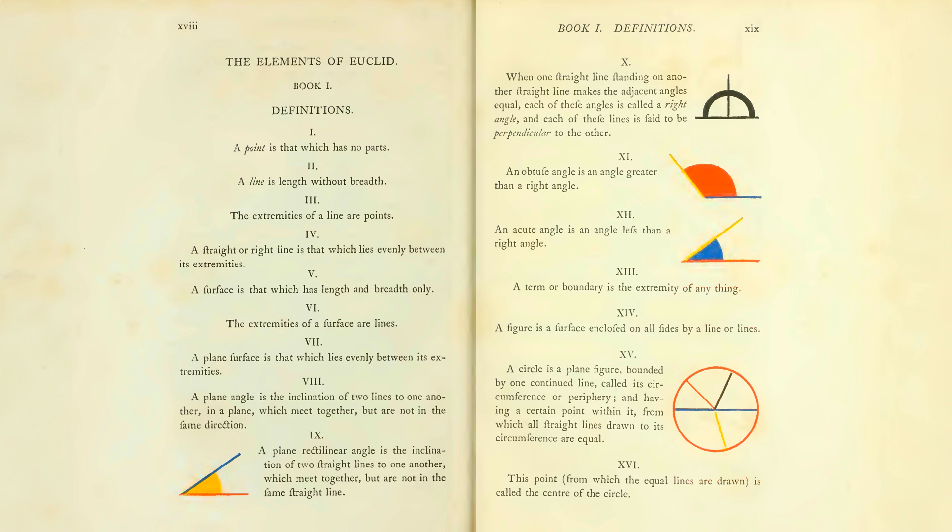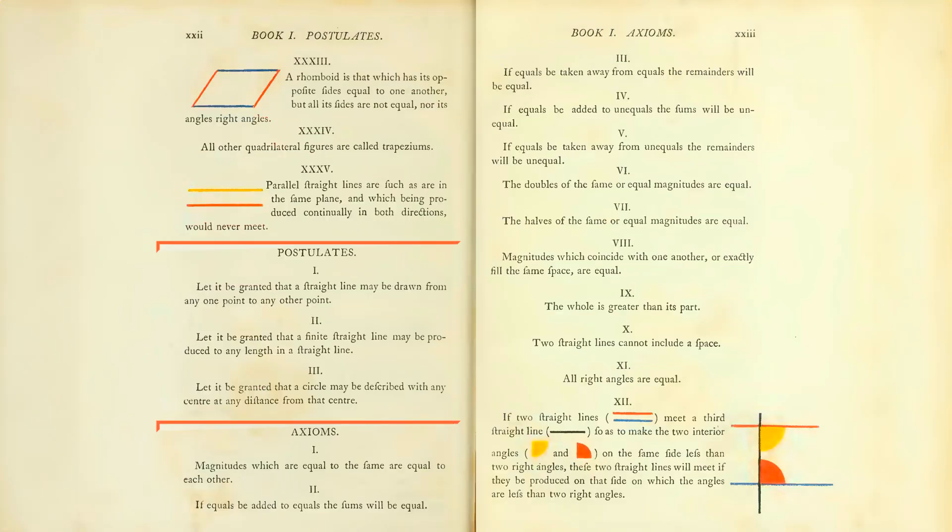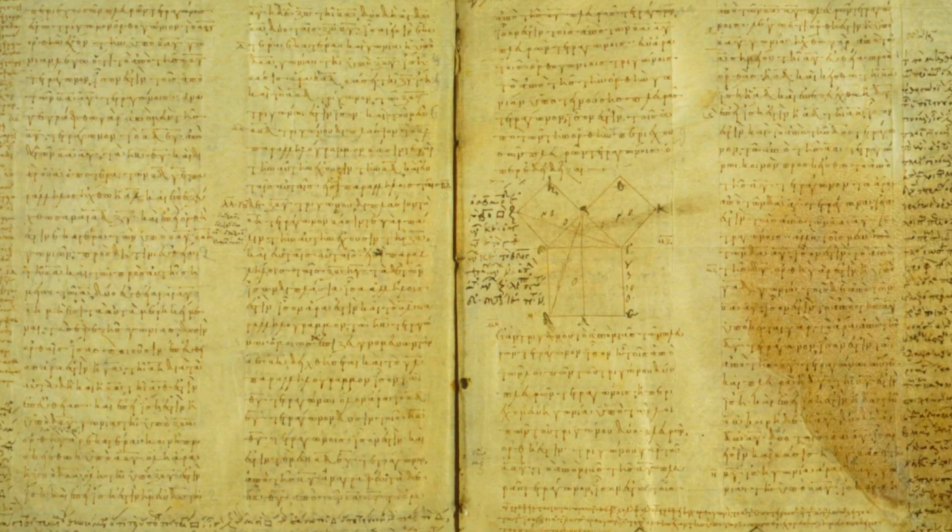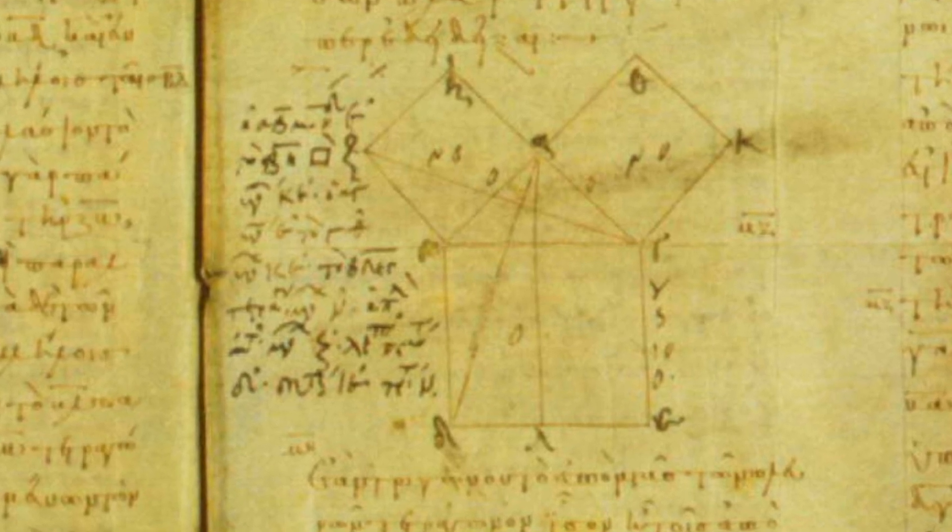Book one begins with definitions for geometric concepts, such as points, straight lines, angles, right angles, circles, and types of polygons. It then lays out Euclid's set of obvious truths, and proceeds to prove numbered statements called propositions. For instance, the first book has 48 propositions, with the last two dealing with the Pythagorean theorem and its converse.